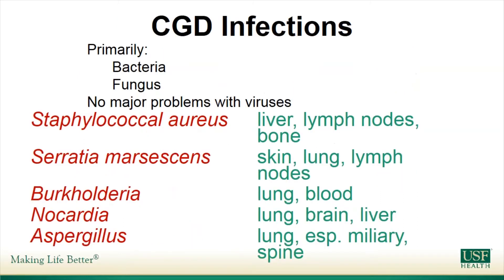CGD infections are primarily from bacteria and fungi. The five most common infections seen in North America tend to affect certain areas of the body — liver, bone, lymph nodes, and sometimes the blood or even the central nervous system like the brain.